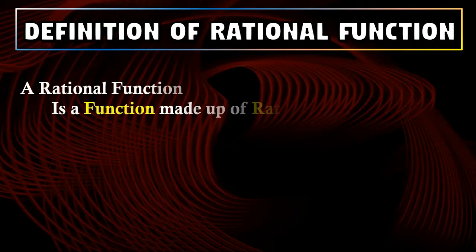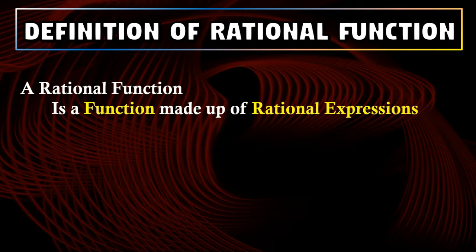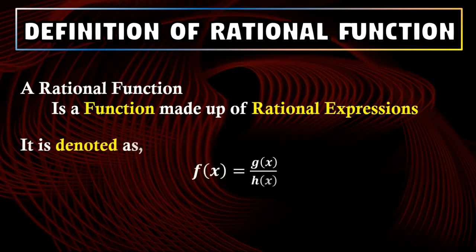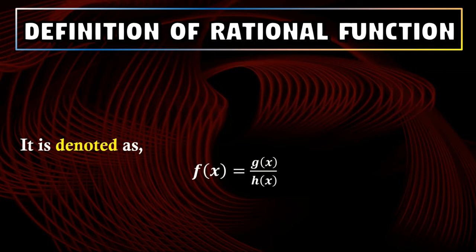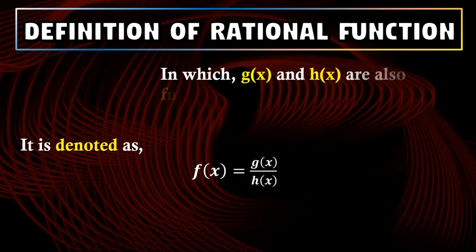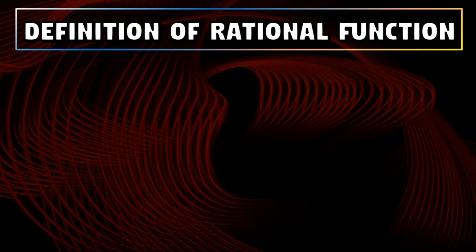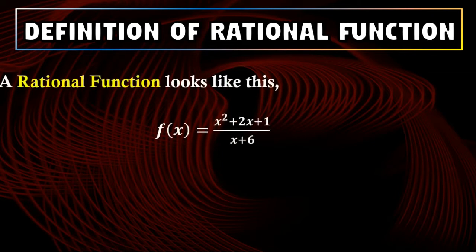A rational function is defined as a function consisting of rational expressions. Its notation is f of x equals g of x over h of x, wherein g of x and h of x are both functions. Note that this is just a notation. Thus, the true figure of a rational function looks like this: f of x is equal to x squared plus 2x plus 1 over x plus 6.